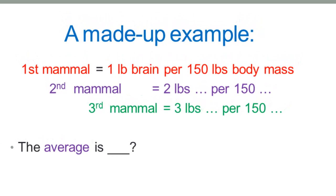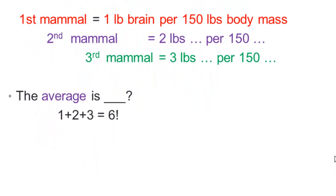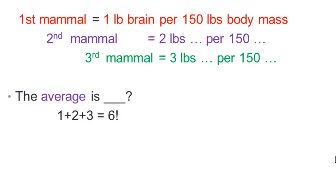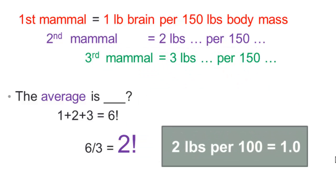So to turn this into an index, first we calculate the average. And that means we have to add that up. We've already got it relative to body mass. So we just add one plus two plus three and get six. And then we divide by three, which is our sample size, and we find that two pounds of brain per 150 pounds of body mass. That's the average. And so we call that 1.0.